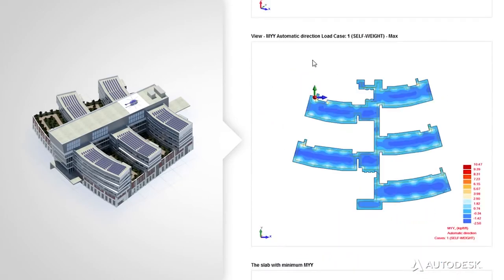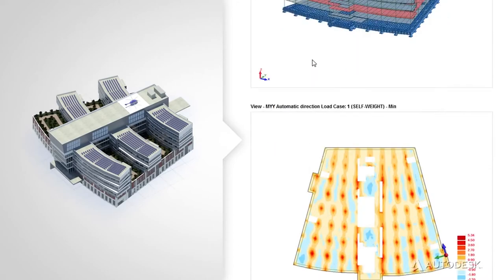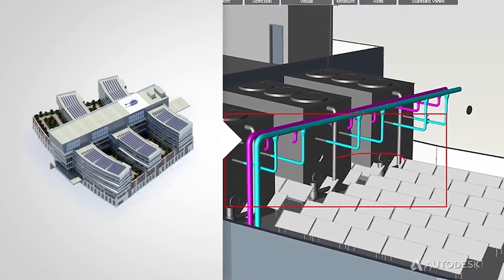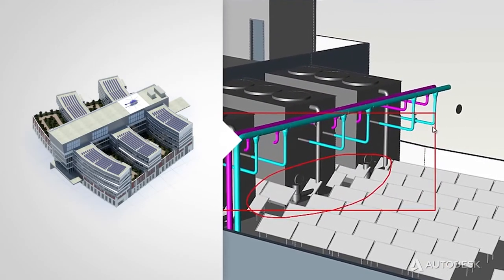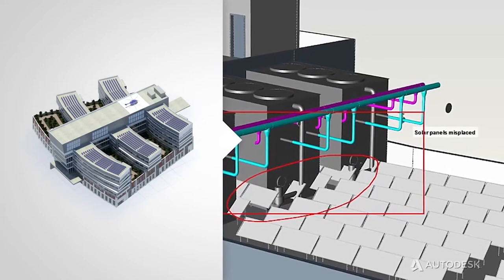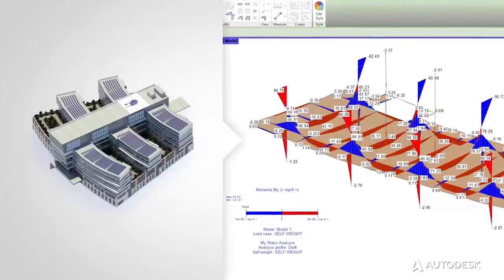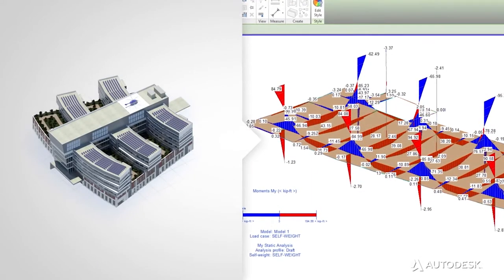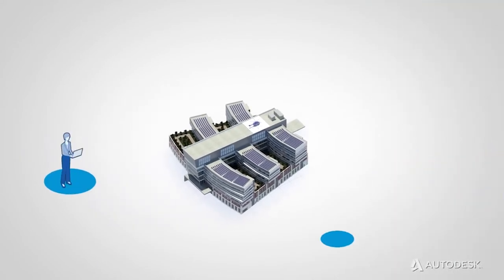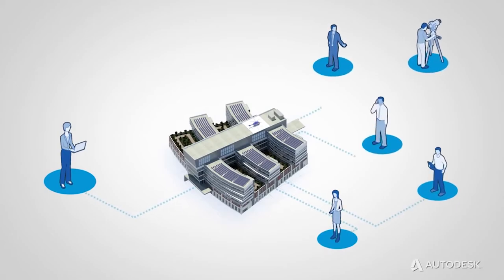At any point in the life cycle of the project, the information is there. Accurate to help reduce time consuming errors and rework. Accessible from virtually anywhere at any time by all the project stakeholders. And actionable to help inform your decision making with simulation and analysis. BIM helps everyone working on a project to coordinate and communicate seamlessly. With all project team members working on the same building information model, knowledge transfer is streamlined. This leads to improved accuracy and reduced rework.